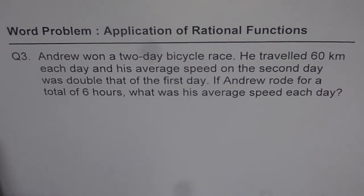Question number 3 is: Andrew won a 2 day bicycle race. He traveled 60 kilometers each day and his average speed on the second day was double that of the first day. If Andrew rode for a total of 6 hours, what was his average speed each day?